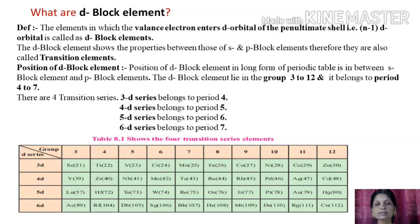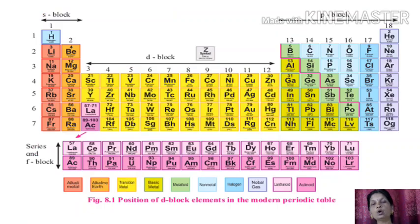And the 6d series contains actinium, rutherfordium, dubnium, seaborgium, bohrium, hassium, meitnerium, darmstadtium, roentgenium, and copernicium. Now let us discuss the position of d-block elements in the whole modern periodic table. It is shown by the yellow colored elements in the modern periodic table. See the figure very carefully.